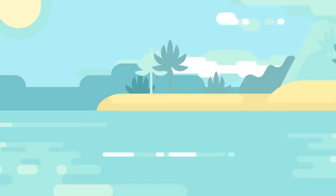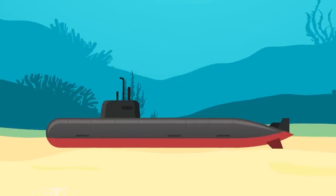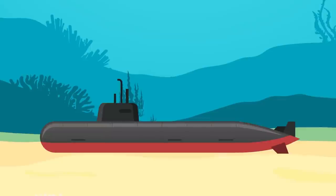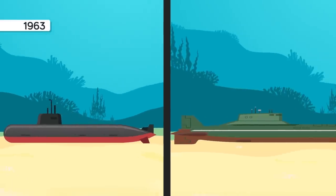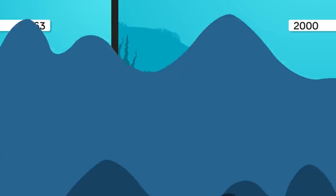40. Only two submarine accidents have ever exceeded 100 onboard deaths: the sinking of the USS Thresher in 1963 and Russia's K-141 Kursk in 2000.